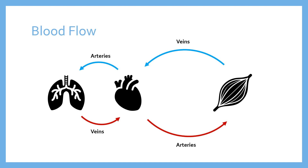So arteries go away from the heart, and veins go into the heart. The other vessels we'll talk about next help us understand what happens when arteries bring blood to their target location — how that blood comes into contact with the lungs or muscle, how it's transferred through the tissue, and how it comes out the other side into veins.